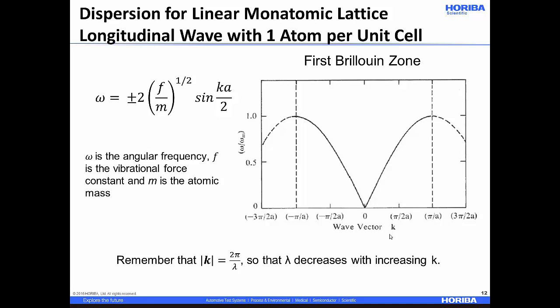Within the first Brillouin zone, the frequency as a function of k relates to the wavelength of the phonon in the monatomic lattice. Since |K| = 2π/λ, the wavelength λ decreases with increasing k. As we move from the Brillouin zone center to the zone edge at π/A, we go to decreasing wavelengths. The longest wavelength is essentially at the Brillouin zone center, where it approaches infinity.